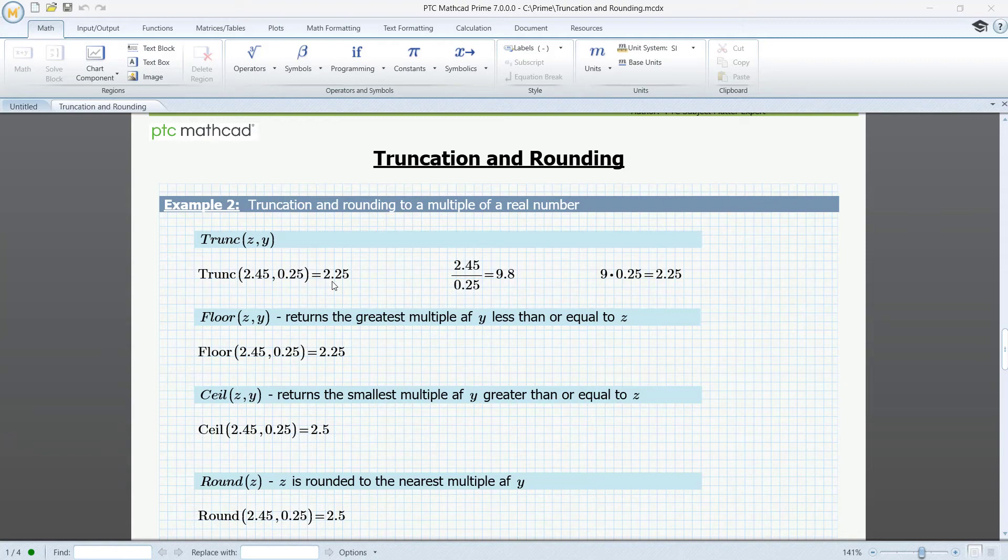We will have the same result when using floor, since floor of 9.8 is 9. If we use ceil, the result will be 2.5 since the ceil of 9.8 is 10. Finally, round will give the same result since 9.8 is rounded to 10.